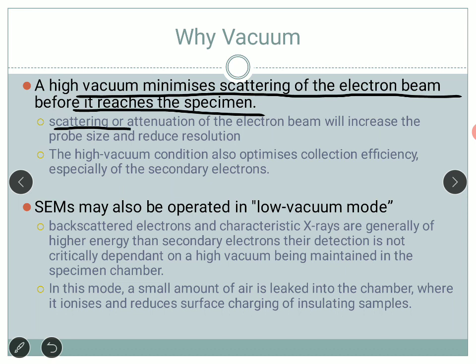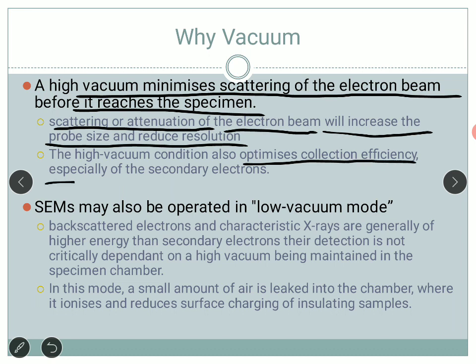Scattering or attenuation — by attenuation we mean the loss of signal of the electron beam generated and incident on the sample — will increase the probe size and reduce resolution. We don't want the electron to get scattered or attenuated, else the probe size increases. We need a very focused beam and higher resolution. The high vacuum condition also optimizes the collection efficiency, especially of the secondary electron. We need vacuum to gather maximum signal.